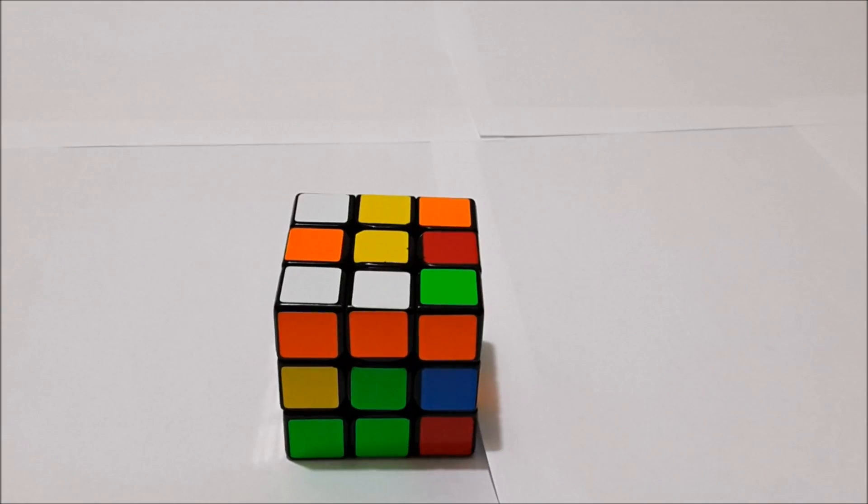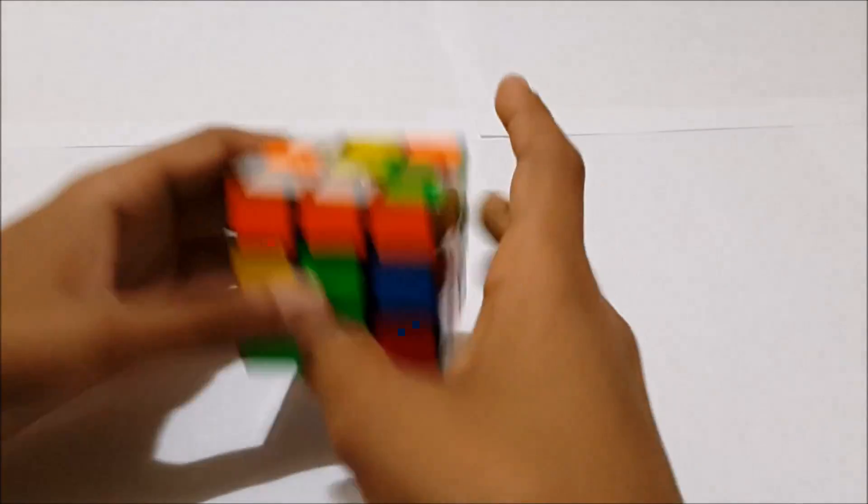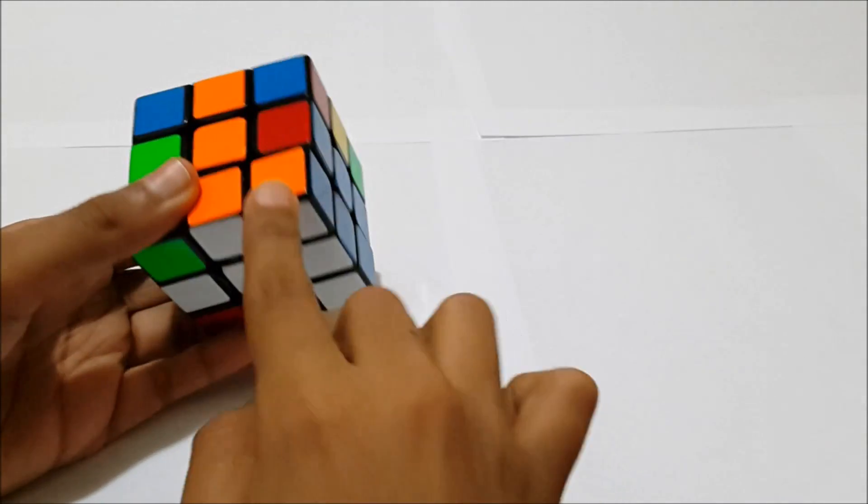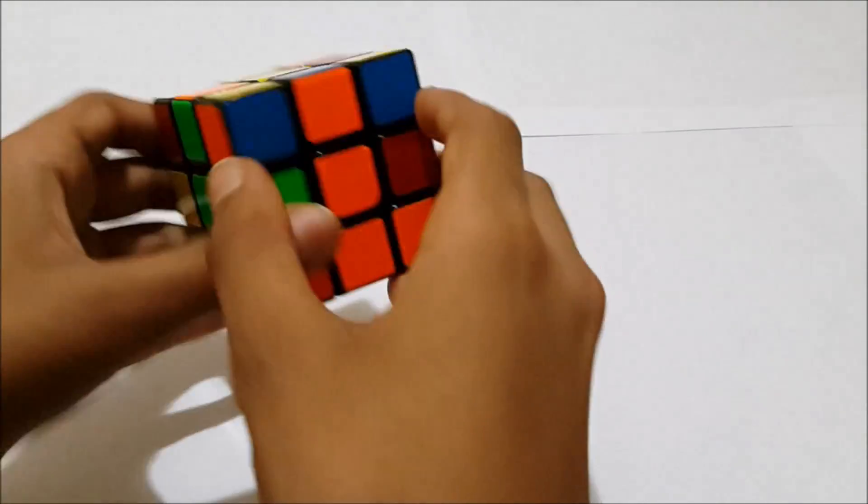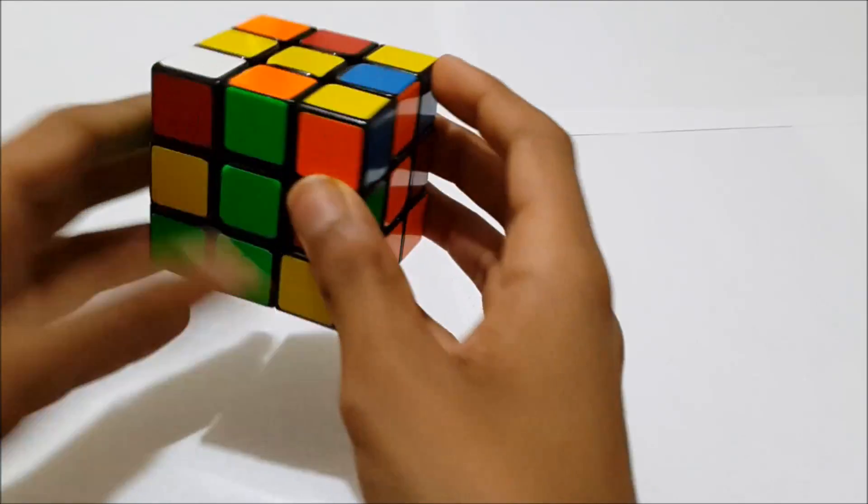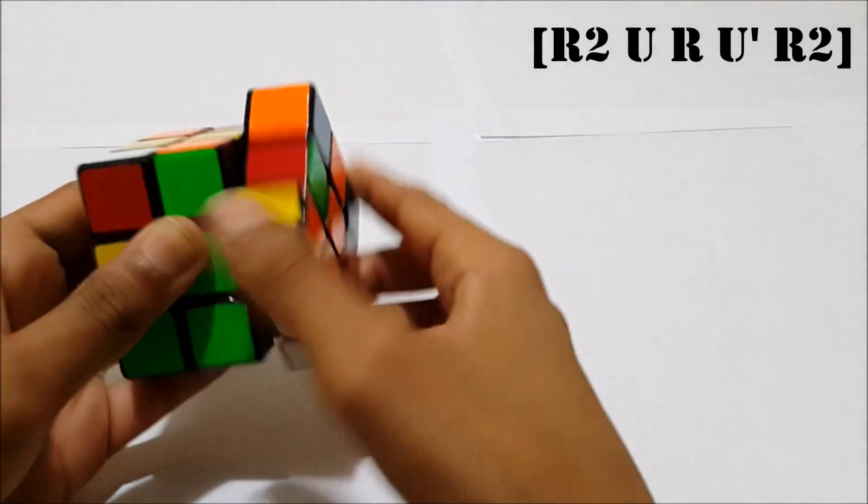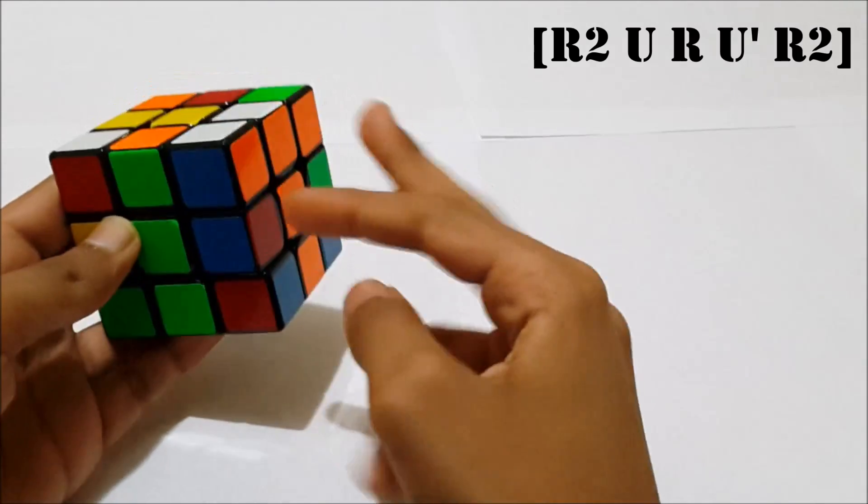Alright, so this next case is the exact opposite of the previous case. Alright, so it's where we have the corner, soft corner in the back. And the edge is still up here. So what we're going to do is we're going to still start off with an R2 to bring that bar to the top.